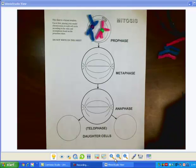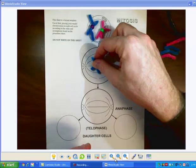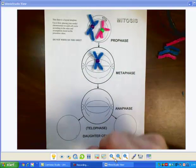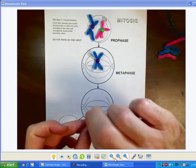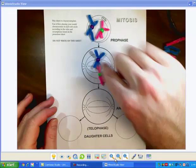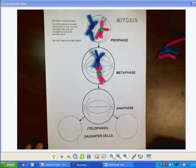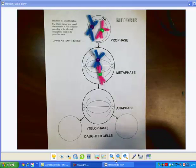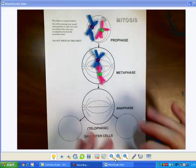What will happen for metaphase is these two homologous chromosomes will line up along the middle of the cell. The spindle fibers will attach, which are these lines.